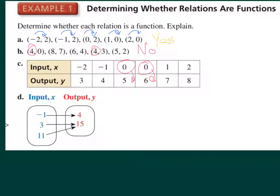We look at this last example, and we see 1 going to 4, 3 going to 15, and 11 going to 15. This is okay. This does not break any rules. Each input has exactly one output. On the flip side, let's say that I had 1 also mapping to 15. If you have 1 input going to 2 different outputs in a mapping, that is a no for a function.